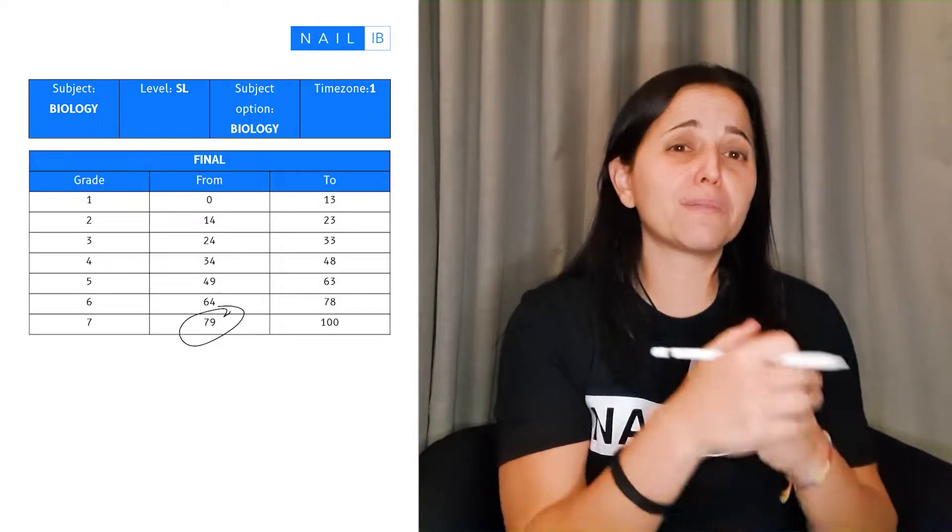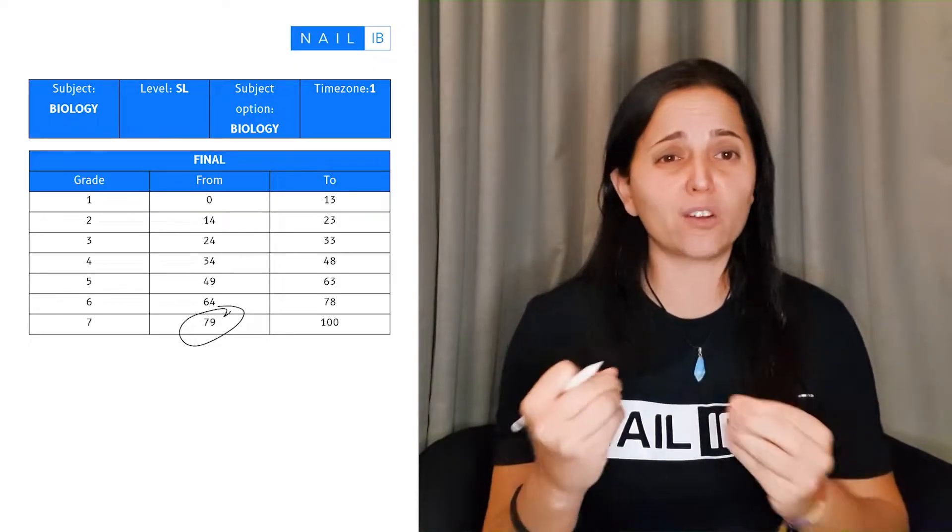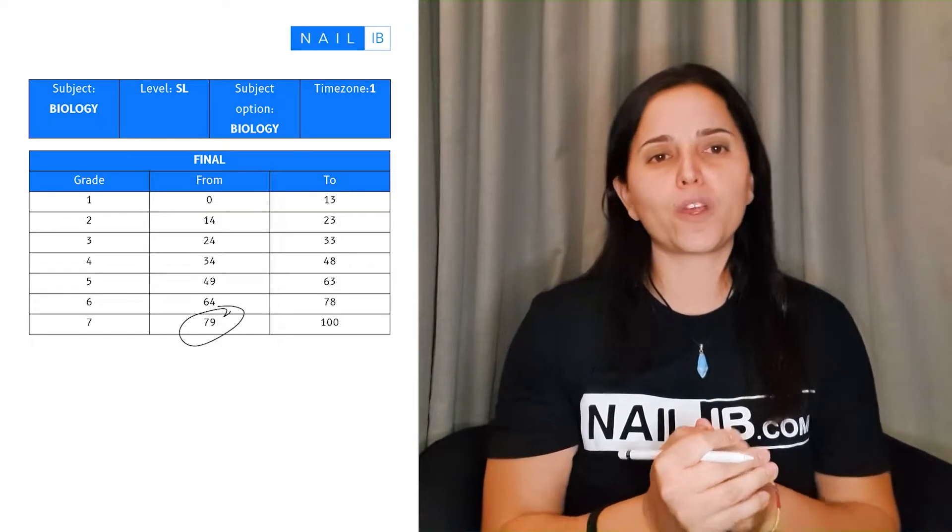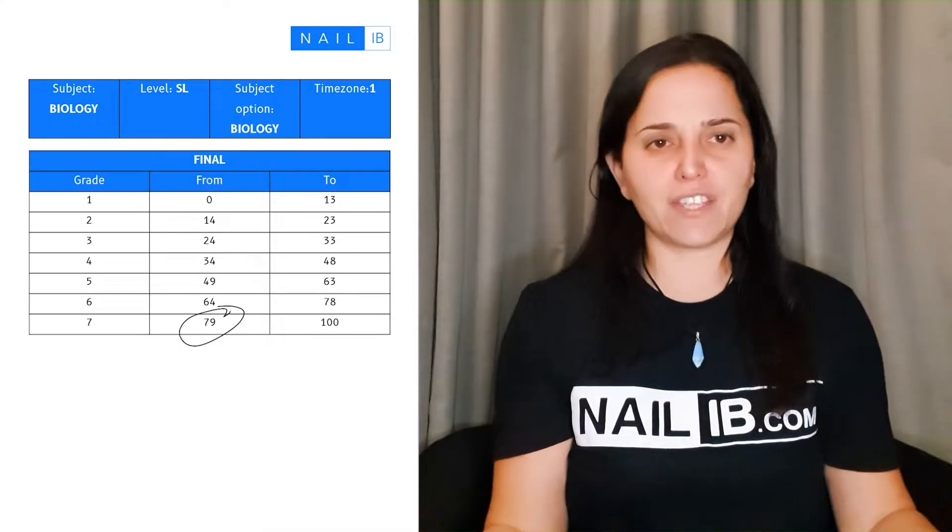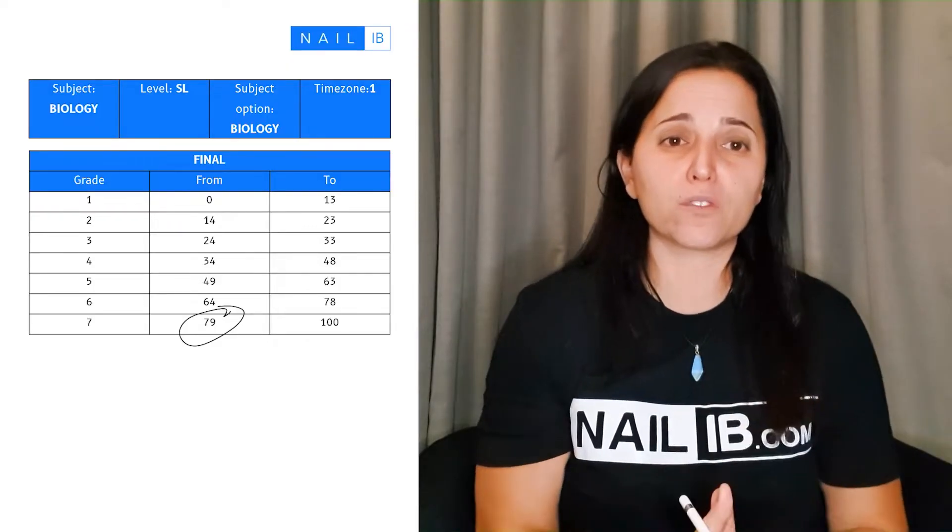This is the range that does change from year to year depending on the performance of the students on their paper one and paper two. But I'm telling you that most of these changes are usually four to five points. Sometimes it's one or two points. They don't change that much. There will be no drastic change of 10, 20 points. So this is the range in which you're getting from one to seven.